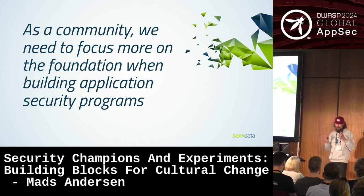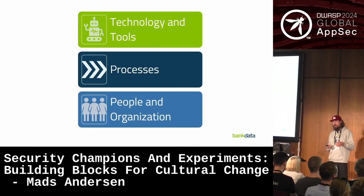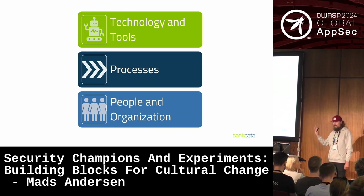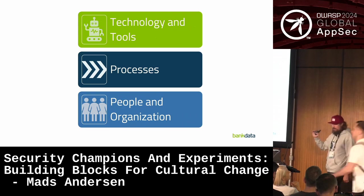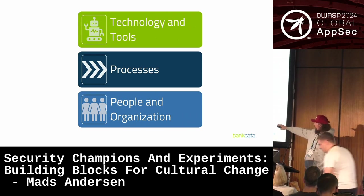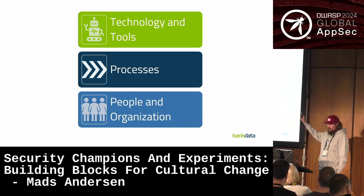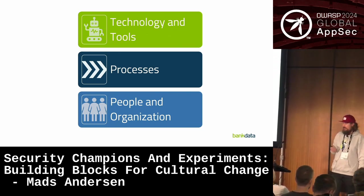To me that really comes from looking at what people often call the three pillars of application security: technology and tools, processes, and people and organization. I've flipped them over because I think it's more like layers. It's really important that you have people and organization figured out before you start looking at processes, and then you can build technology and tools on top of that. If you start from the top, you're most likely going to fail.